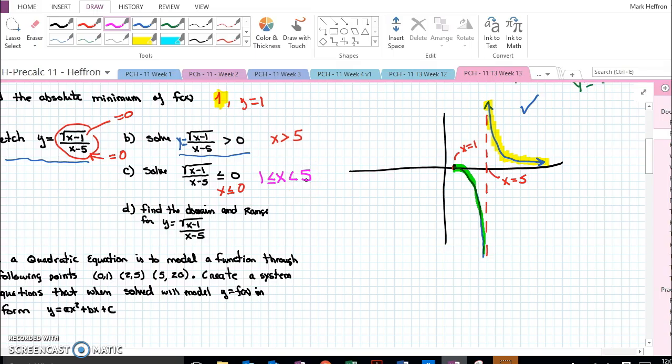Find the domain and range. The domain and range then would be everything greater than or equal to 1 except the asymptote. So we would say x cannot equal 5. We could also write it like this.